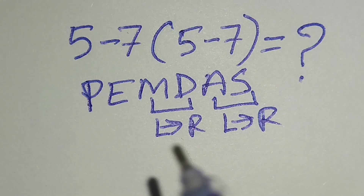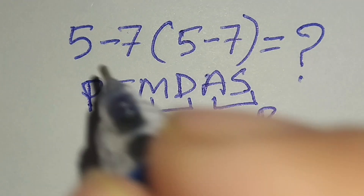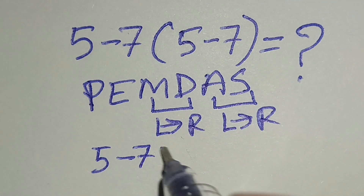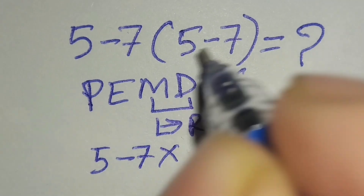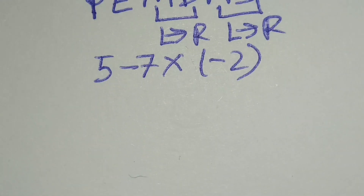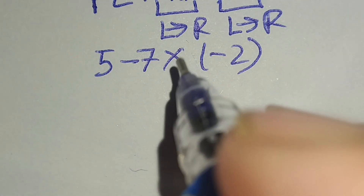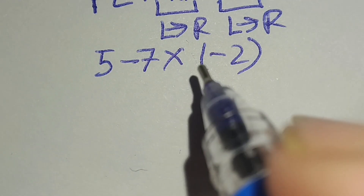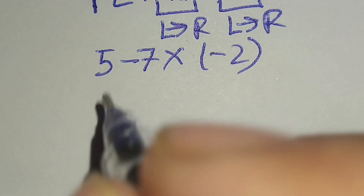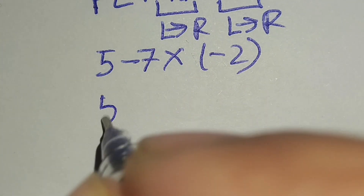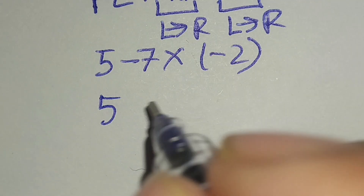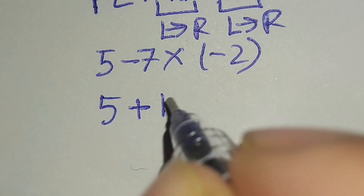Therefore, at first we have to work with the parentheses. Here this 5 minus 7 gives us negative 2. Now I have to work with this multiplication, because multiplication has higher priority than subtraction. Therefore this 5, minus 7 times this negative 2, gives us plus 14.